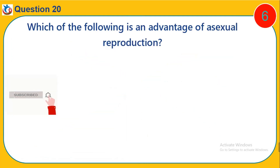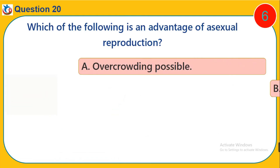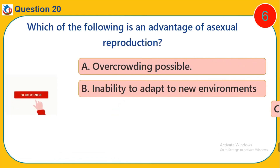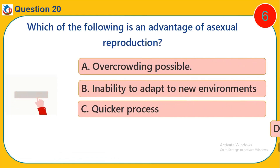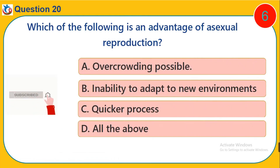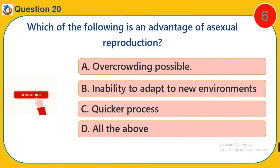Question 20. Which of the following is an advantage of asexual reproduction? A. Overcrowding possible. B. Inability to adapt to new environments. C. Quicker process. D. All the above.